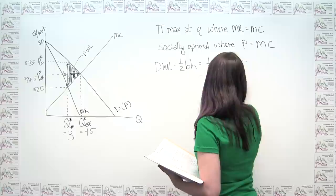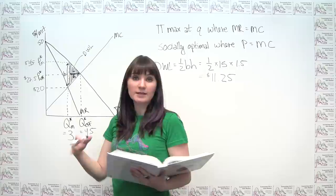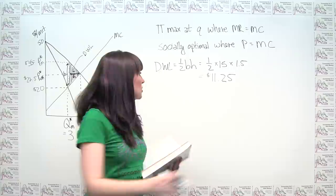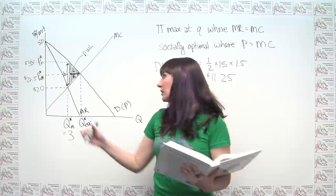We measure deadweight loss in dollars, as we do with consumer and producer surplus. So this monopolist acting like a monopolist creates $11.25 in deadweight loss compared to a situation where it was instead acting in a socially efficient manner — or, in other words, like a competitive market.